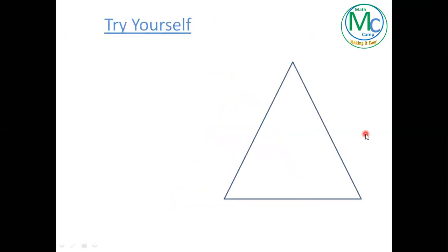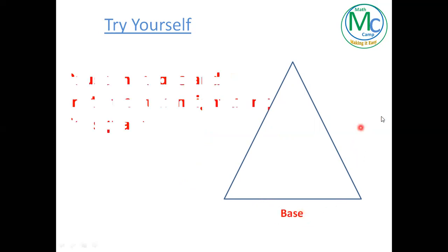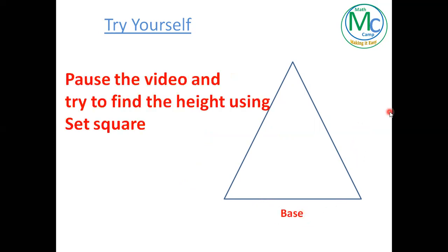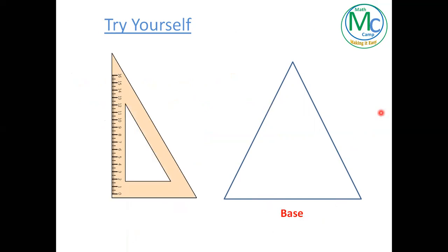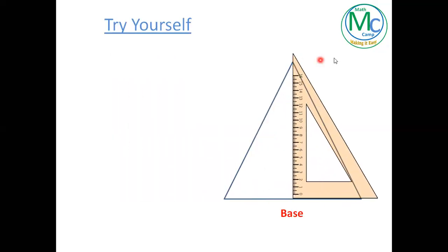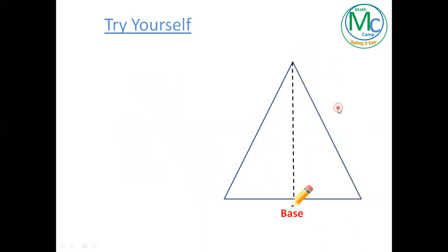Now it's your turn. There's a triangle and this is the base. Pause this video, find out the height for this base, and once you have your answer you can resume. To find the answer: place the set square so its base slides over the base of the triangle, then slide until the height side touches the vertex. The height for this triangle is this.